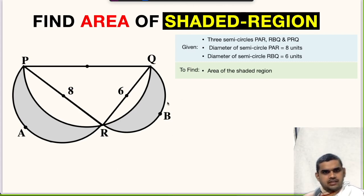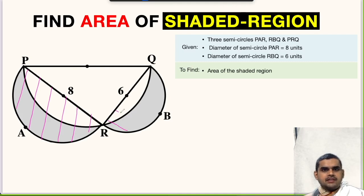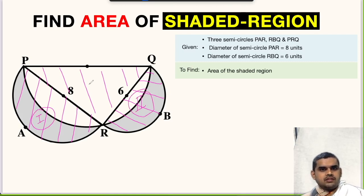First of all, if we want to find the area of this shaded region, our approach should be first to find the area of semicircle PAR, then we can find the area of semicircle RBQ, then we can find the area of this triangle PRQ. If we add these three areas, we will get the area of complete figure.